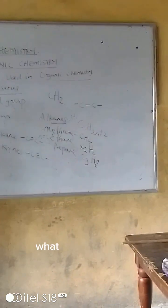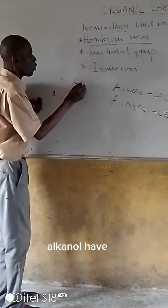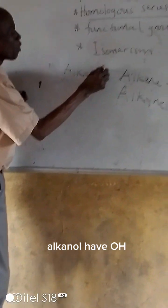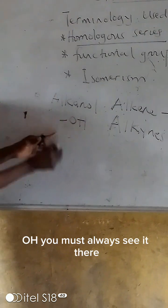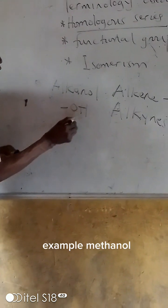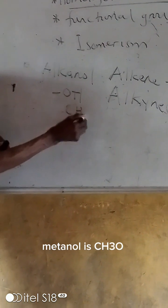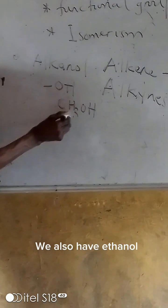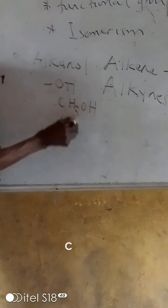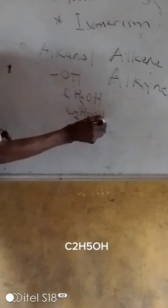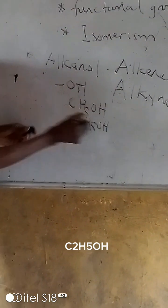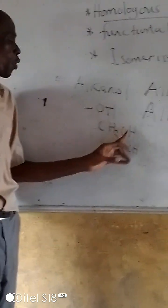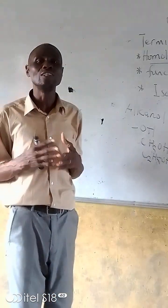So the functional group of alkanes is a single bond, that of alkenes is a double bond, and that of alkynes is a triple bond. Likewise, alcohols have OH as a functional group — the hydroxyl group OH. You must always see it there. For example, methanol is CH3OH, and ethanol is C2H5OH. So you can see all of them have OH as a functional group.